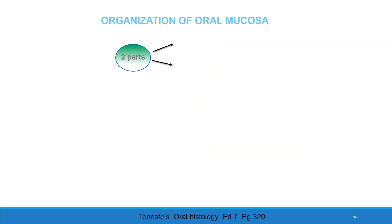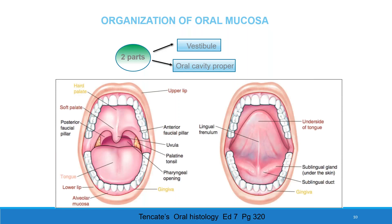Organization of oral mucosa. Oral mucosa is divided into two parts: the vestibule and the oral cavity proper. The vestibule is bounded by the lips and cheeks, and the oral cavity proper is separated from the vestibule by the gingiva and alveolar bone. The hard palate and soft palate form a superior border, while the base of the tongue and floor of the mouth form the inferior border. The posterior border is formed by the pillars of fascia and tonsil.